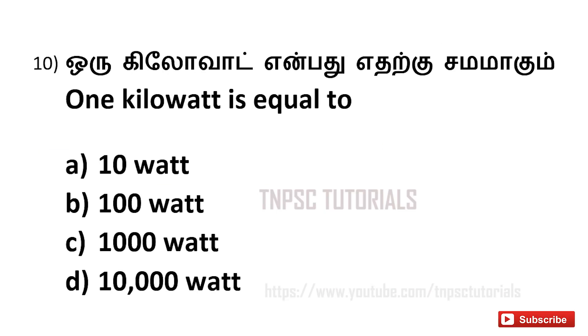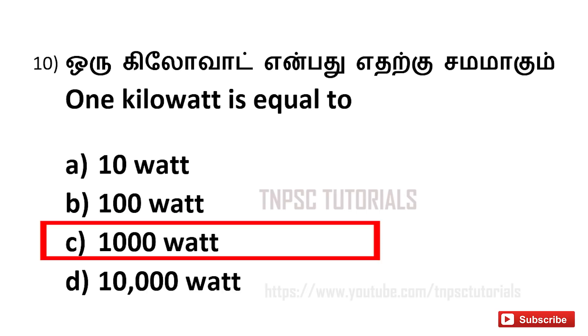Tenth one, one kilowatt is equal to. A. Ten watt, B. Hundred watt, C. Thousand watt, D. Ten thousand watt. And the answer is C, Thousand watt.